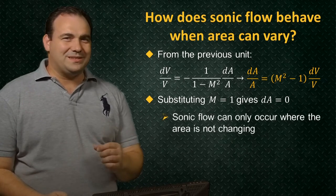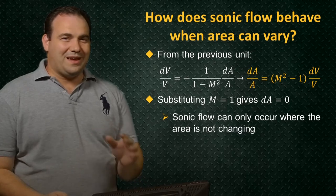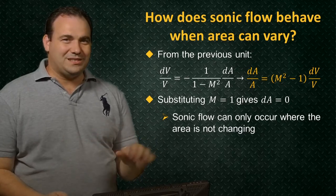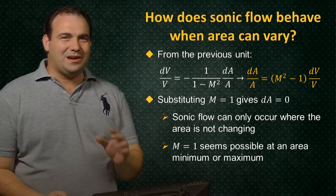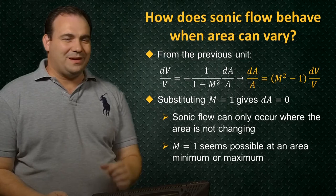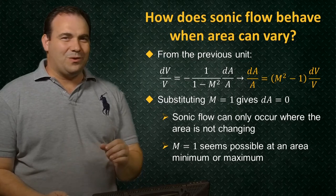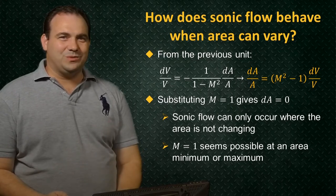This is telling us that sonic flow can only occur where the area is not changing locally. The implication is that a Mach number of 1 must occur at either an area minimum or an area maximum, where dA/dx is equal to 0.